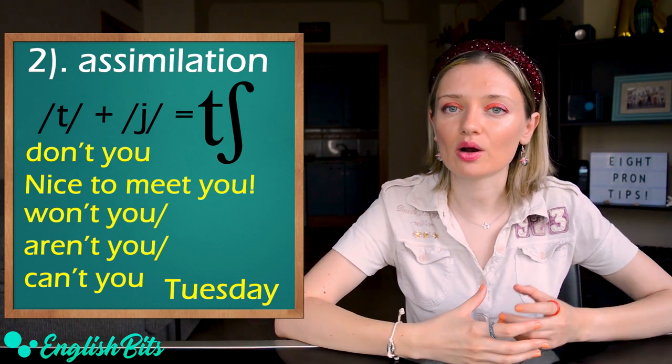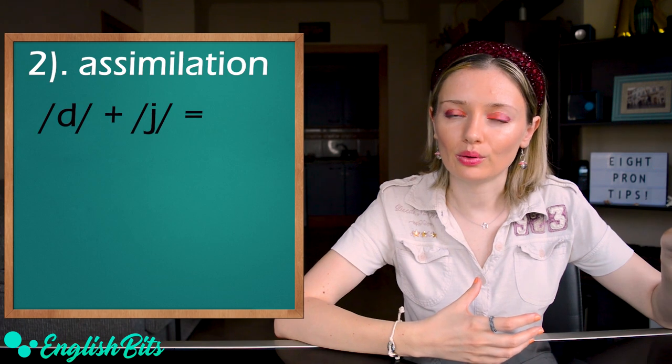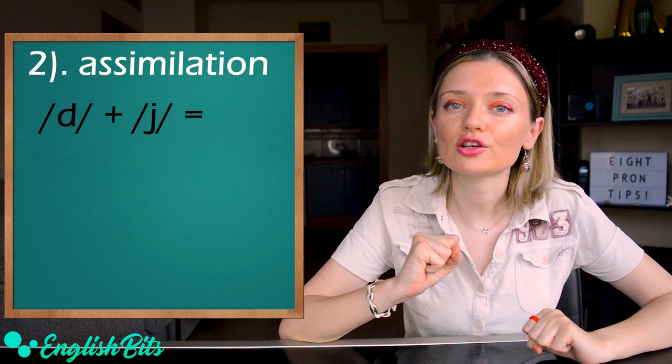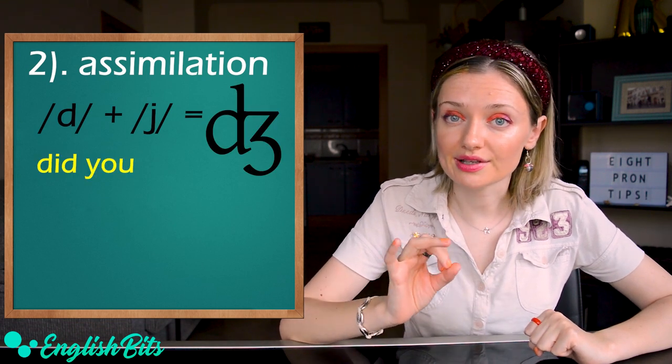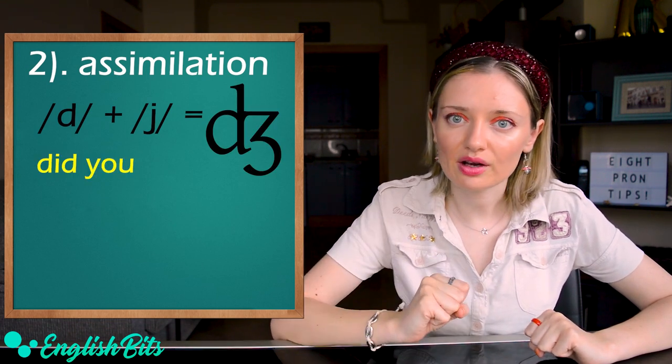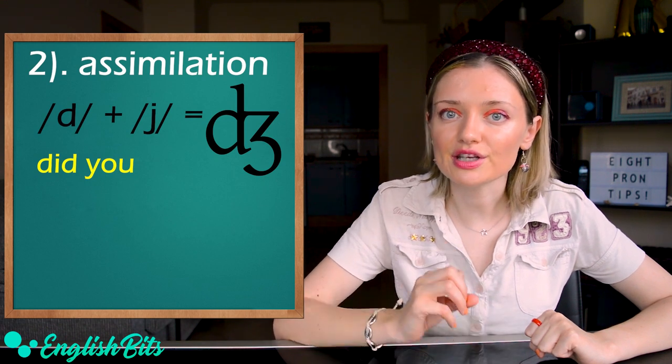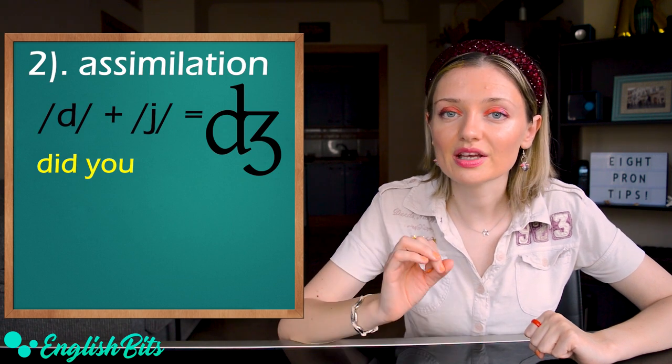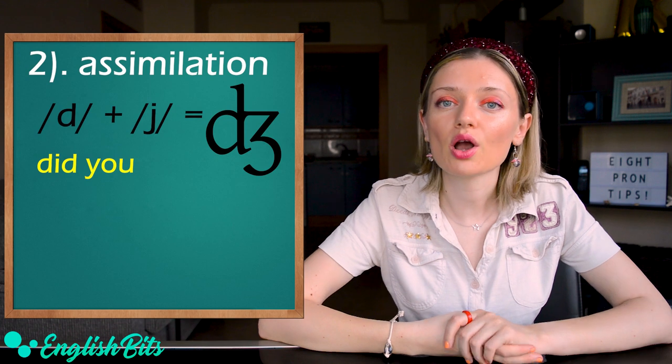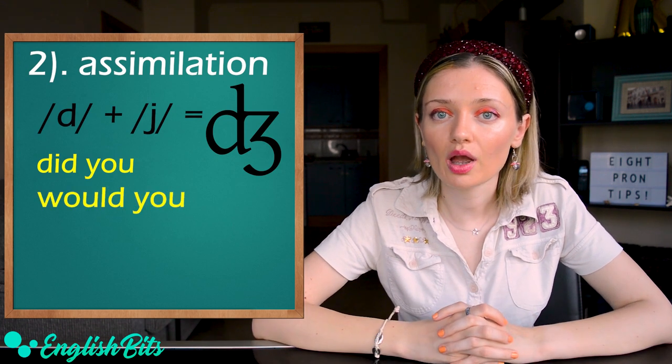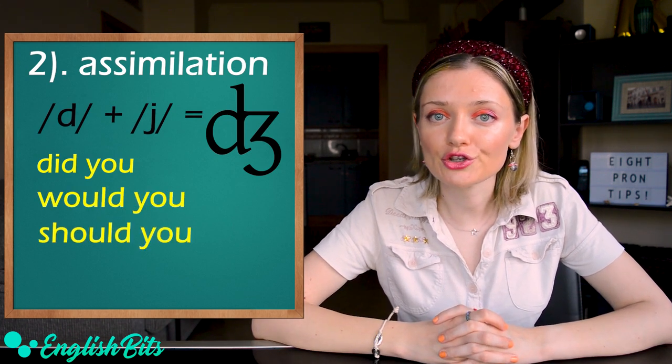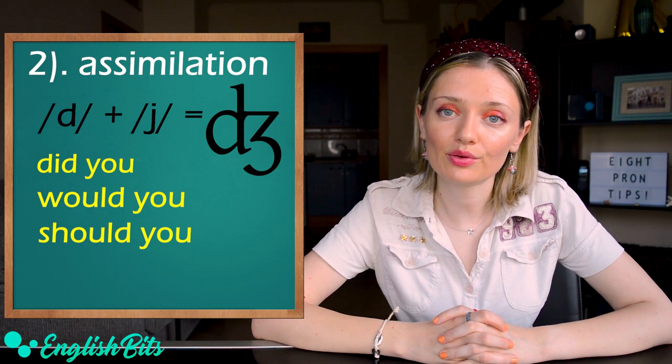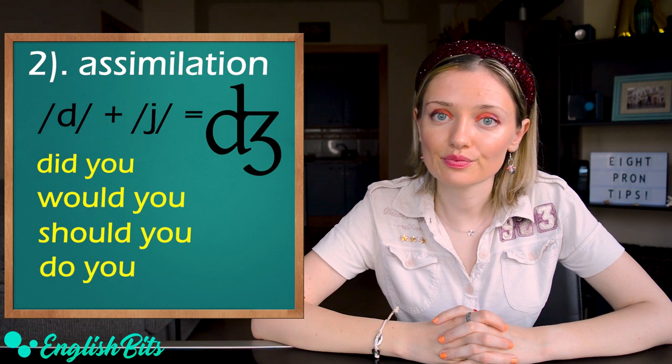And when we have the sound D followed by the sound Y, the new sound is J. For example, did you is pronounced like did you. Not did you. But did you. And some more examples. Would you. Should you. Or the last example. Do you.